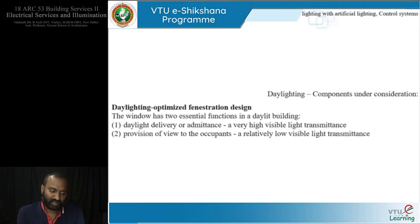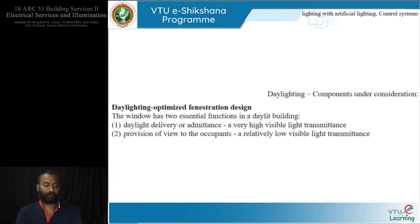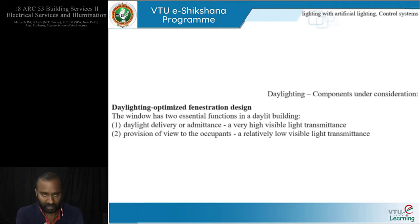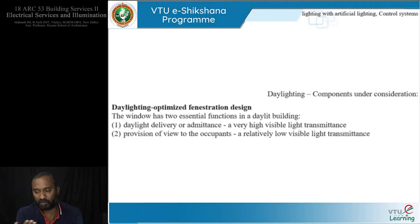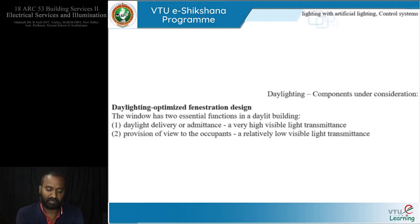For daylighting-optimized fenestration design: the window has two essential functions in a building — one is daylight delivery, getting light into the building; the second is view, or visual connectivity and permeability. The daylight delivery function generally has relatively high visible light transmittance, whereas the provision of a view to occupants has a relatively low visible light transmittance.